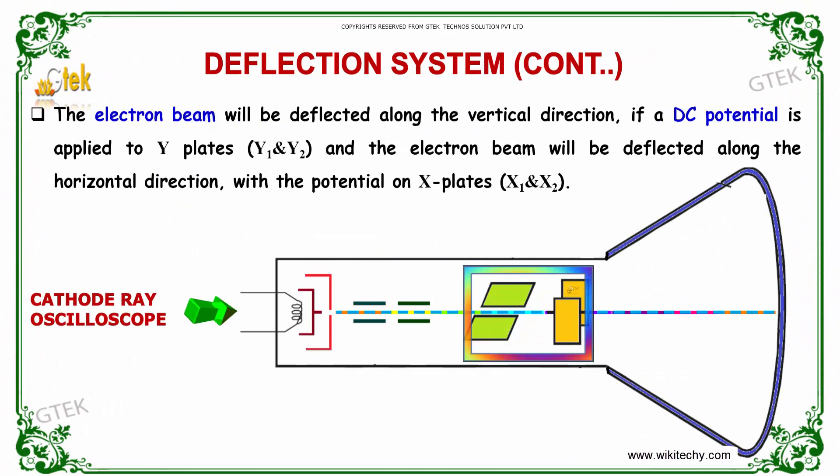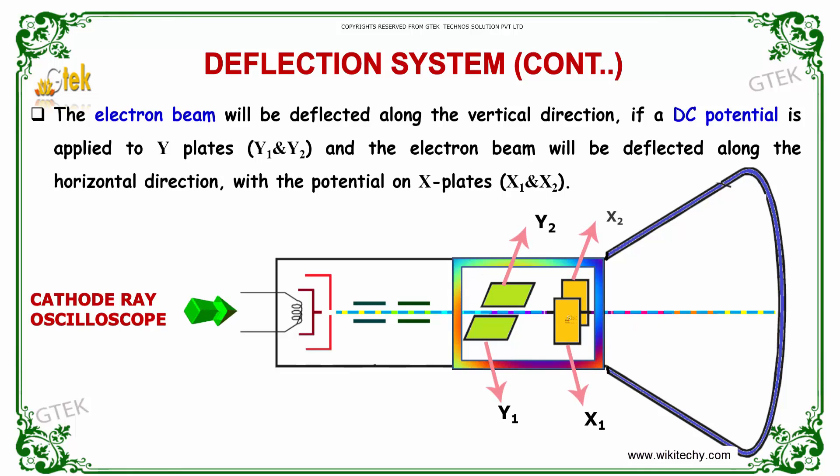The electron beam will be deflected along the vertical direction if a direct current potential is applied to this Y plate, that is Y1, Y2. The electron beam will be deflected along the horizontal direction with a potential on X plates, which is indicating the X1 and X2.